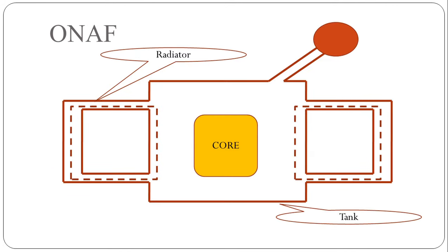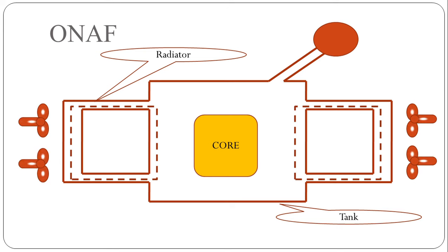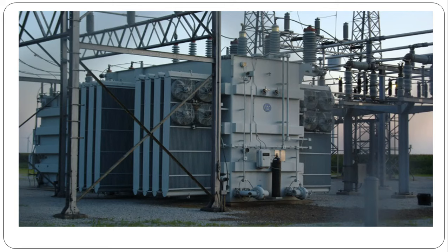In this transformer, oil natural air natural cooling is the base, but if we use fans for enhancement of cooling then it becomes oil natural air forced cooling. In this practical transformer you can see that the radiators are connected to the tank. Fans are used to force air through the radiators, enhancing the cooling of transformer oil. This is ONAF — oil natural air forced cooling.